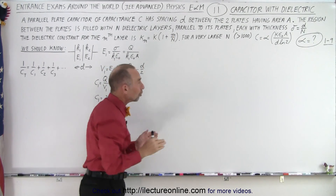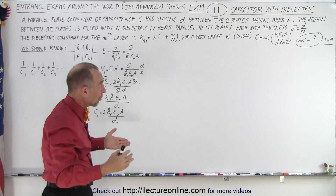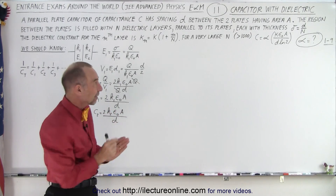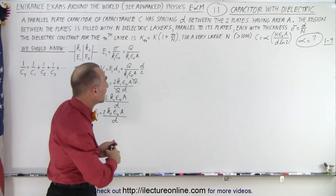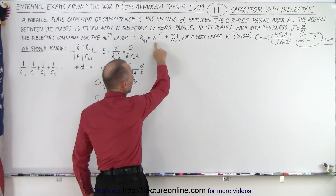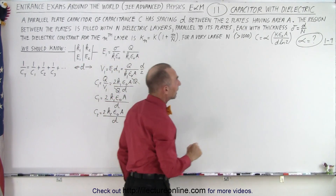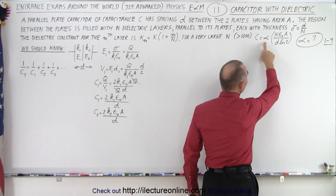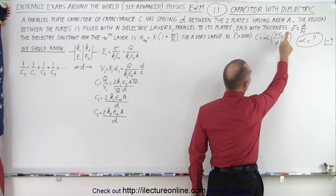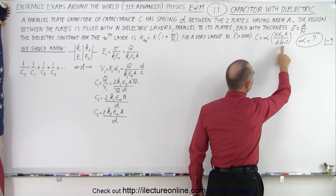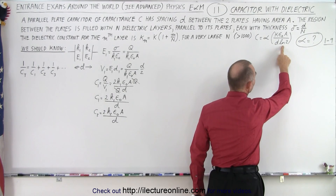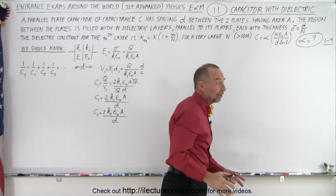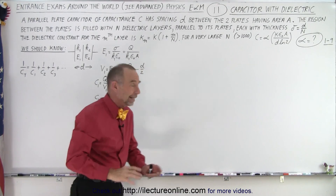For a very large N — say greater than a thousand layers — each layer is very thin with dielectric constant equal to K times (1 + m/N). The claim is that the capacitance equals alpha times K·epsilon_0·A divided by D divided by the natural log of 2, and we need to find alpha, which is an integer between 1 and 9.